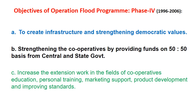Operation Flood Phase 4, not very well known, started in 1996 and ran up to 2006 for 10 years. Major objectives were: creating infrastructure and strengthening democratic values in cooperatives; strengthening cooperatives by providing funds on a 50-50 ratio from central and state governments; and increasing extension work in the fields of cooperative education, personal training, marketing support, product development, and improving standards. Phase 4 placed more emphasis on technical aspects, training, product development, and quality standards.